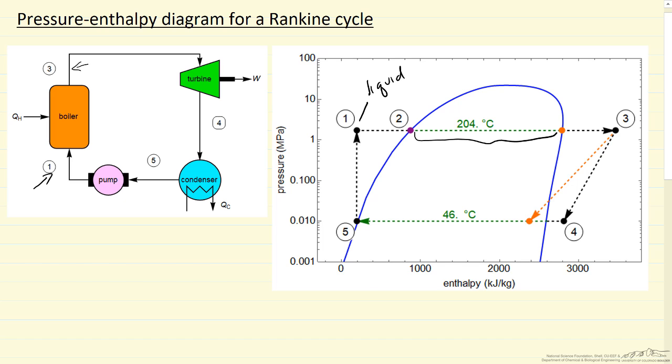Here we vaporize the liquid, this is saturated vapor, and then we continue to add energy until we get superheated steam. So here we have high pressure and high temperature, and high temperature is indicated by the high enthalpy. This is our feed to the turbine.